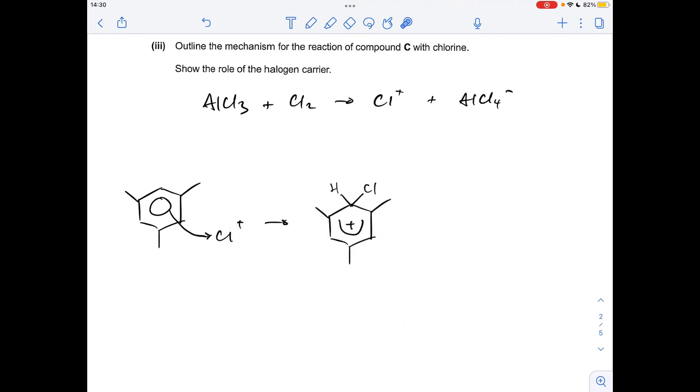Then we need to take a pair of electrons from the C-H bond back in to reform the delocalised ring of pi electrons, which generates our organic product here and an H plus ion. And then to show the role of the halogen carrier acting as a catalyst, we need to reform it. So we take the H plus ion that's just been formed, react it with the AlCl4 minus ion that was formed in that first step, that's going to make HCl and the catalyst is reformed.